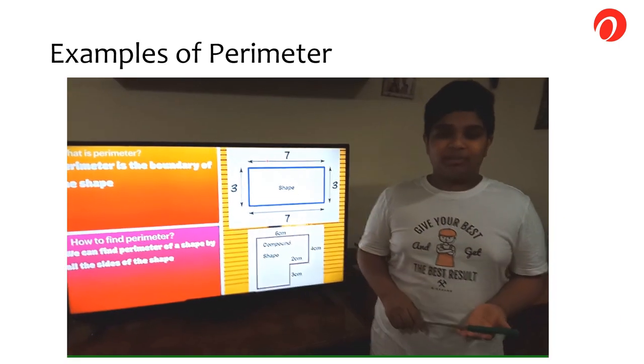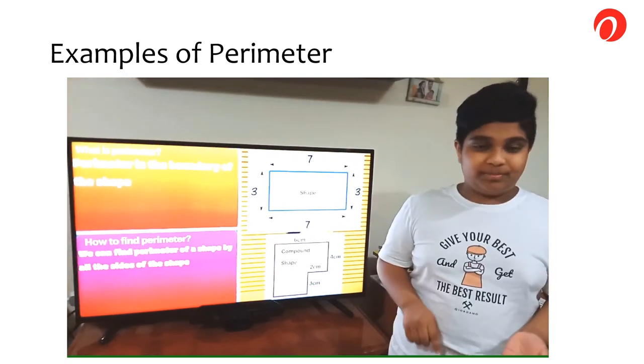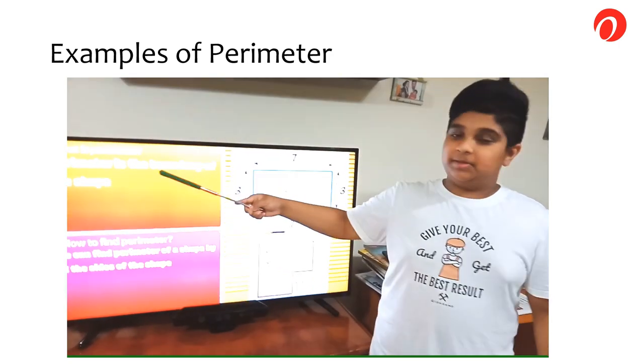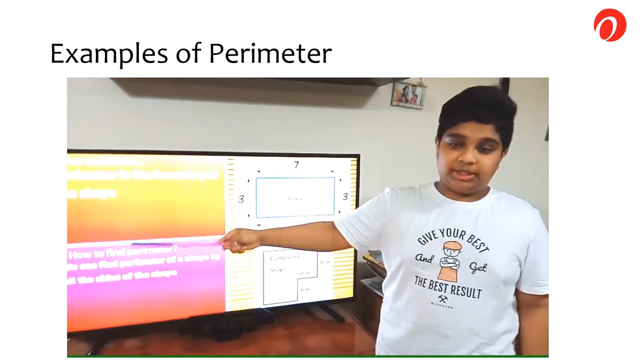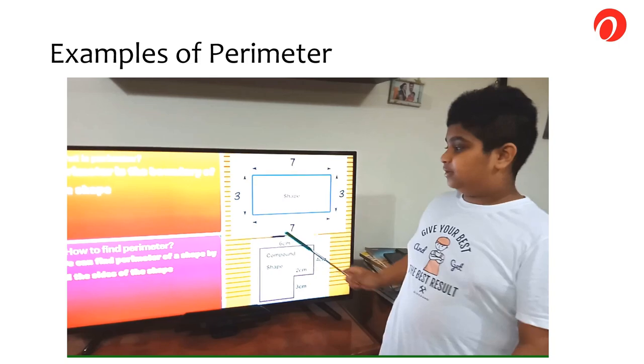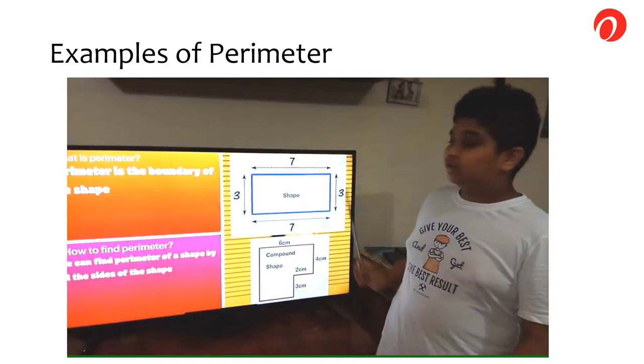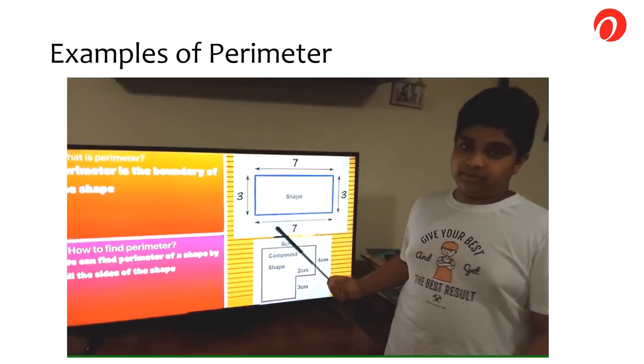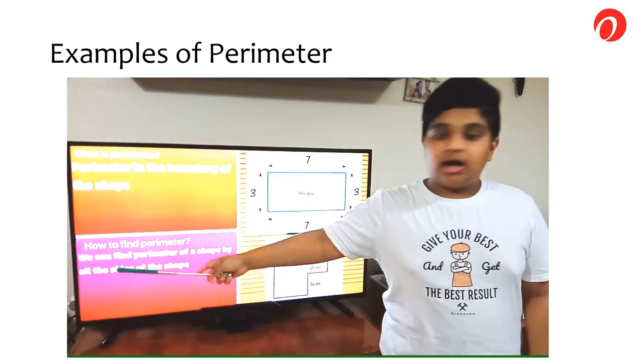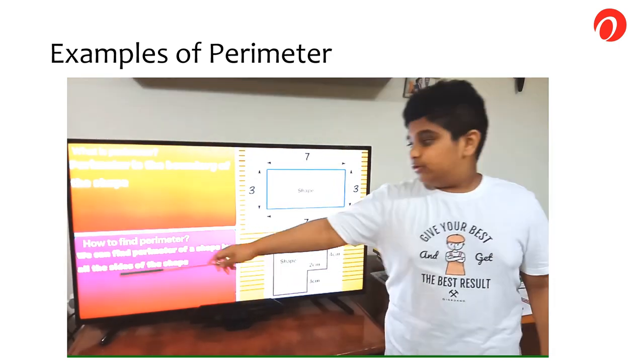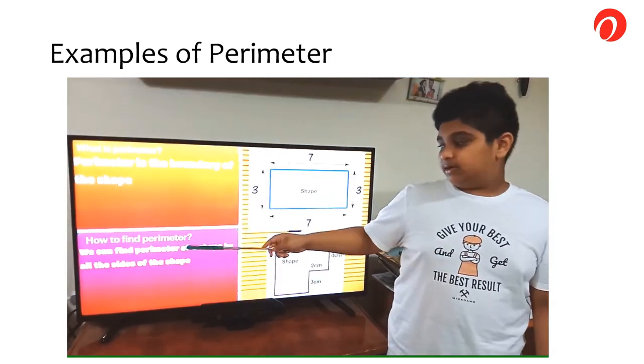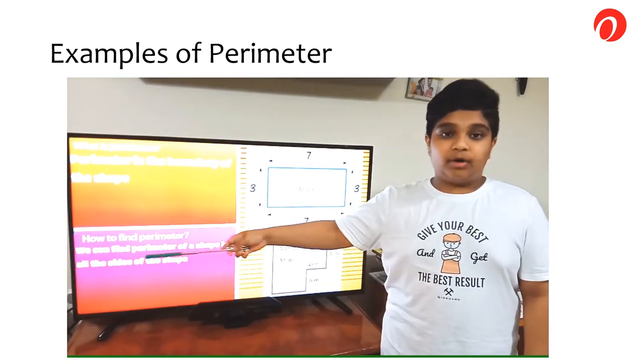Let us get to know more about the perimeter and how to find the perimeter. What is the perimeter? The perimeter is the boundary of a shape. As you can see, this is the perimeter of a rectangle. If you add all these sides up together, you get the perimeter of this shape. Now, let us see how to find the perimeter. We can find the perimeter of a shape by adding up all the sides.